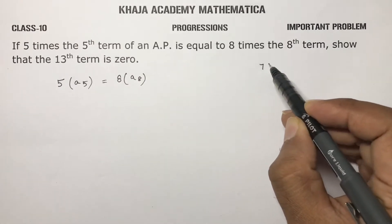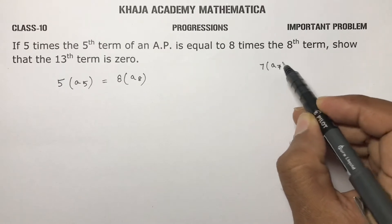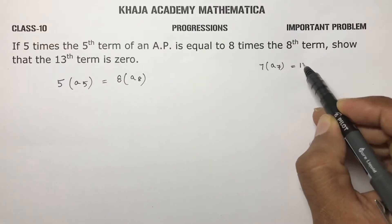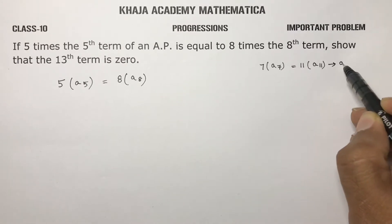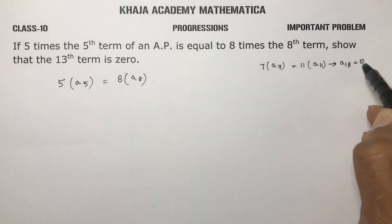If it is in MCQ, then directly you can write like 7 times 7th term equals 11 times 11th term, then 7 plus 11, 18th. The 18th term will be 0.